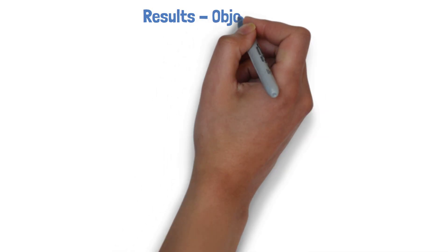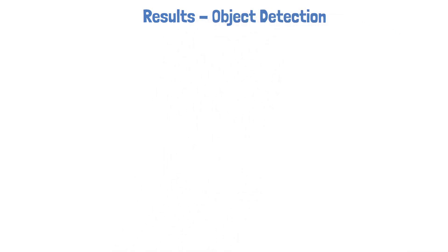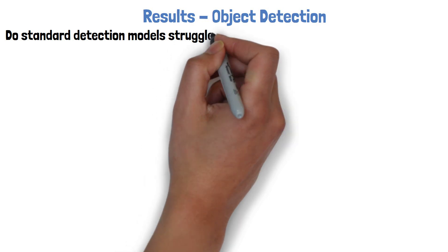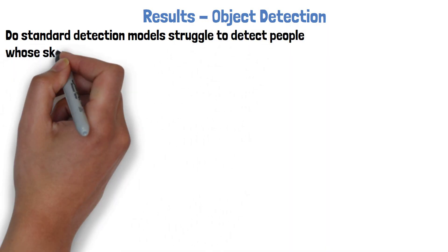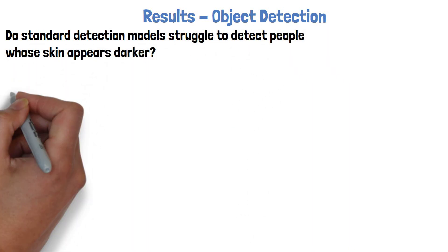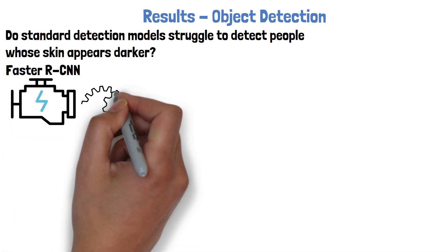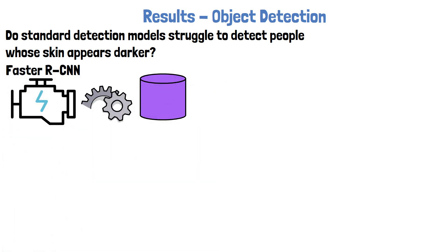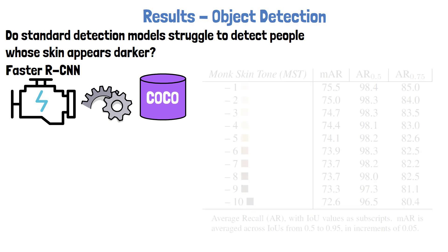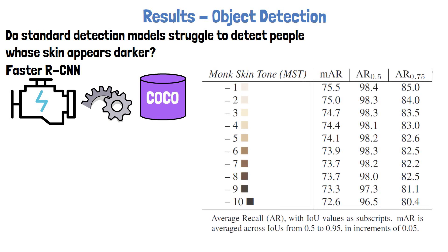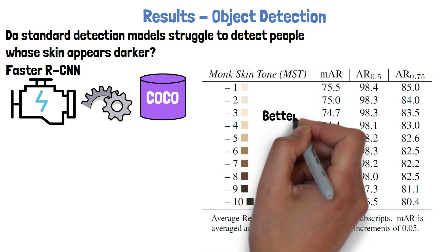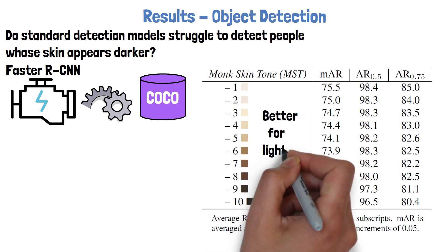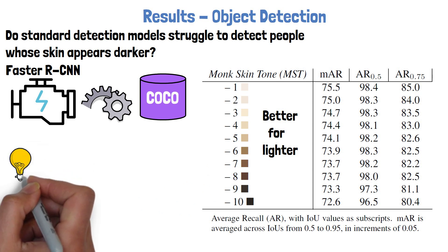Another interesting result in the paper is for object detection tasks, where they try to answer whether a standard detection model struggles to detect people whose skin appears darker. As the standard detection model, the researchers use a Faster R-CNN model pre-trained on the COCO dataset. The following table shows the average recall of detecting a person based on skin tone, where three columns represent different IoU values for the detected box compared to the labeled box. It is clear from the results that the model performed better for lighter skin tones compared to darker skin tones.